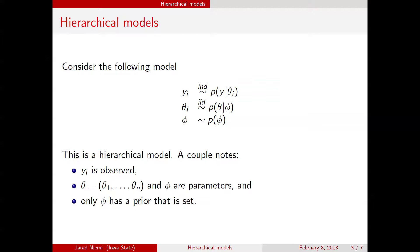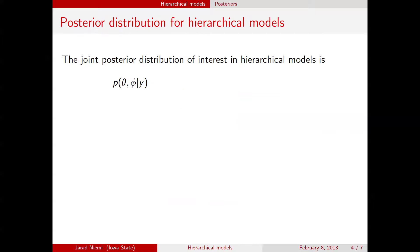Let's talk about doing posterior inference in hierarchical models. The goal typically is the posterior distribution of both the data-specific parameters theta_i as well as the prior parameters phi. Using Bayes' rule, the posterior is proportional to the likelihood conditional on both theta and phi, times the prior for theta and phi. We can use conditional independence rules to note that our data are independent of phi given theta, and break the joint prior into a conditional distribution of theta given phi times the distribution for phi.